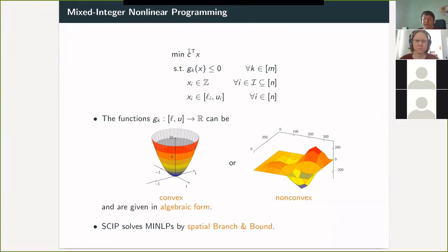SCIP needs a linear objective function, which you can always get by reformulating it. And then you have some constraints, Gk of x, like in an inequality form or equality. And they can be convex or non-convex. And we need to have some given in algebraic form. I will say in the next slide what that means. And then you can have inequality, any other kind of constraints that you can have in SCIP. Bounds are quite important if you want to solve non-convex MINLPs. And the method that SCIP is using is then a spatial branch and bound.